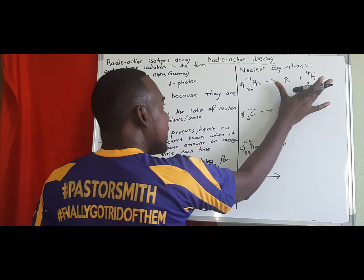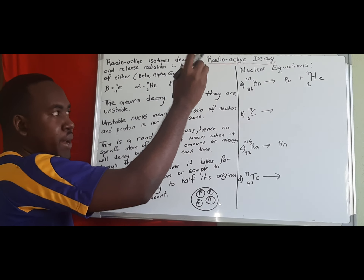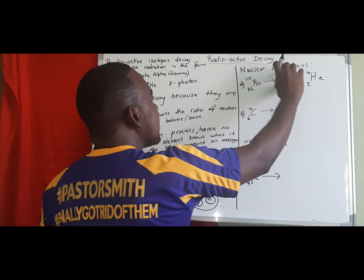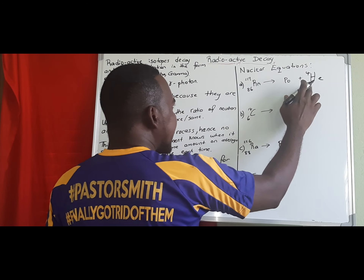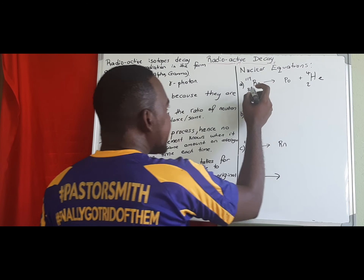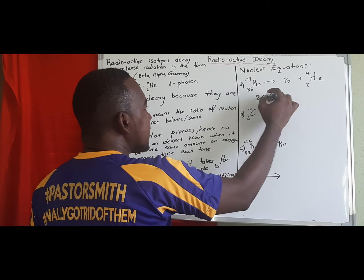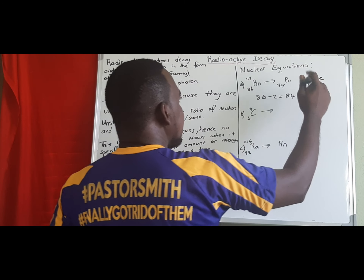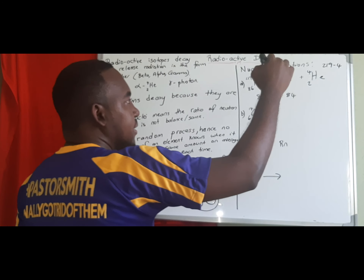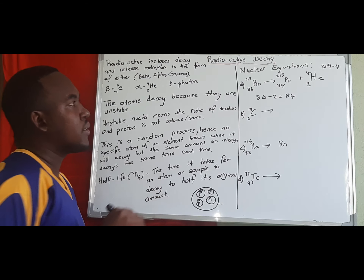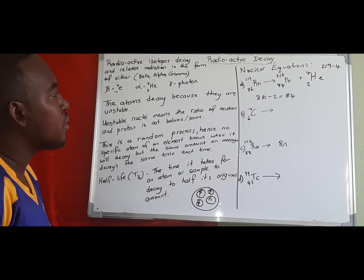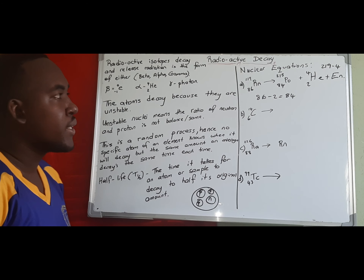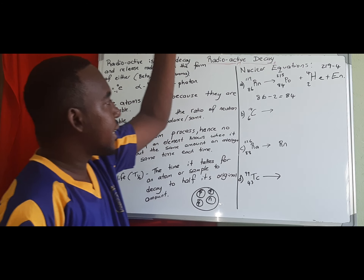We need to ensure the product side mass number and atomic number equal the reactant side. The reactant is called the parent atom and the product the daughter atom. For radon: atomic number 86 minus 2 (from helium) gives us 84 for polonium. For the mass number: 219 minus 4 gives us 215. So polonium has atomic number 84 and mass number 215. These equations also give off energy.